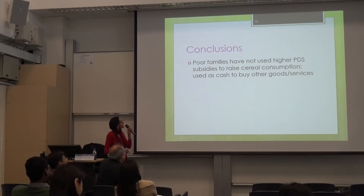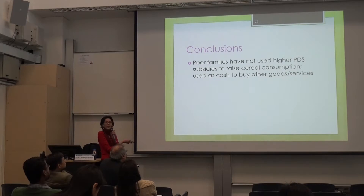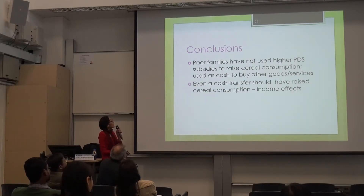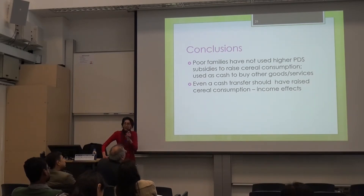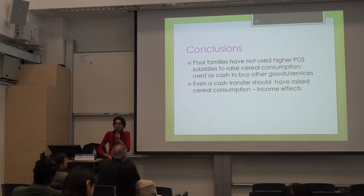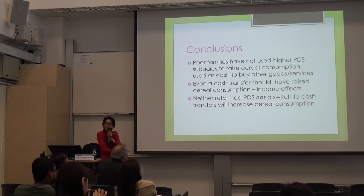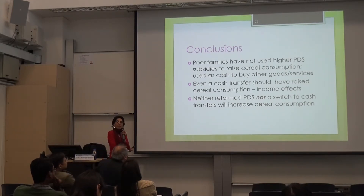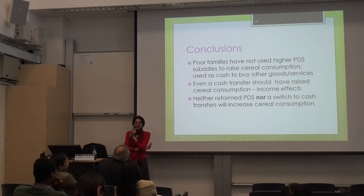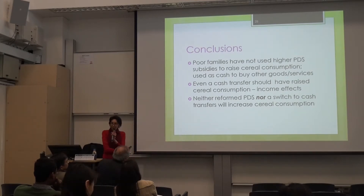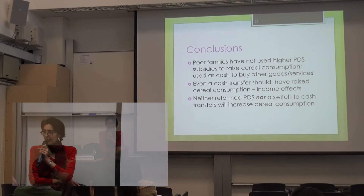This indicates that poor families have not used these higher PDS subsidies — the higher real transfers over the period — to raise cereal consumption. They've used it as cash to buy other goods and services. So the PDS is functioning exactly like a cash transfer. And of course, even a cash transfer should have raised cereal consumption because of income effects, yet cereal consumption has fallen. The debate about the PDS and cash transfers therefore becomes meaningless if your goal is to increase cereal consumption. Neither reforming the PDS nor switching to cash transfers is going to increase cereal consumption, since these households already have larger incomes and larger transfers, and they did not choose to increase cereal consumption.